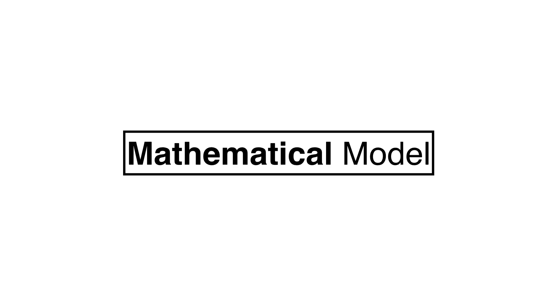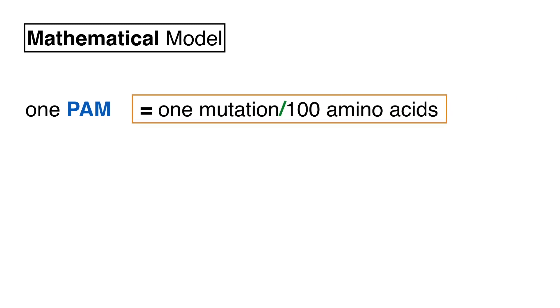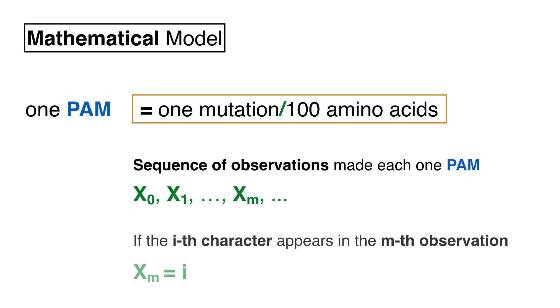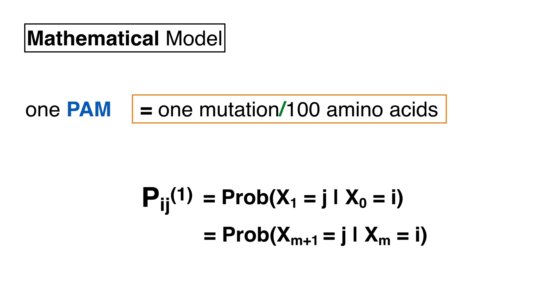The mathematical model starts by setting one PAM as the basic time evolutionary unit. One PAM corresponds to one point accepted mutation per hundred amino acids — or equivalently, one percent of mutations per position. The model assumes an eventually infinite sequence of observations, each separated from the next by one PAM. The number Pij1 is the probability of observing character J in the next observation, given that character I is in the current observation. This configures a discrete Markov chain model.